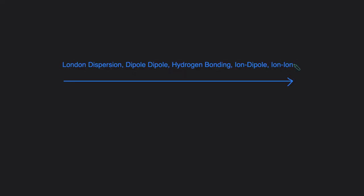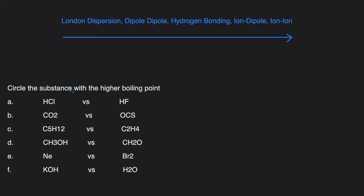Now let's take a look at some example problems. For the following problems we have to circle the substance with the higher boiling point. So remember, when we're looking at higher boiling point we're looking for the substance with the stronger intermolecular forces, because strong intermolecular forces will lead to higher boiling points. So we're going to first determine what intermolecular forces are present in each of these compounds.